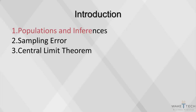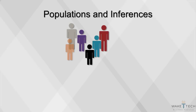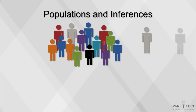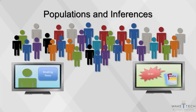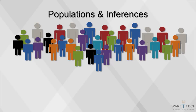This video will cover populations and inferences, sampling error, and the central limit theorem. A population is the set of all members about which a study intends to make inferences. Here's a population of people — we'd like to study their television watching behavior to determine how many watch a particular show, so we can decide whether to purchase advertising spots. But our population is much too large for a feasible study.